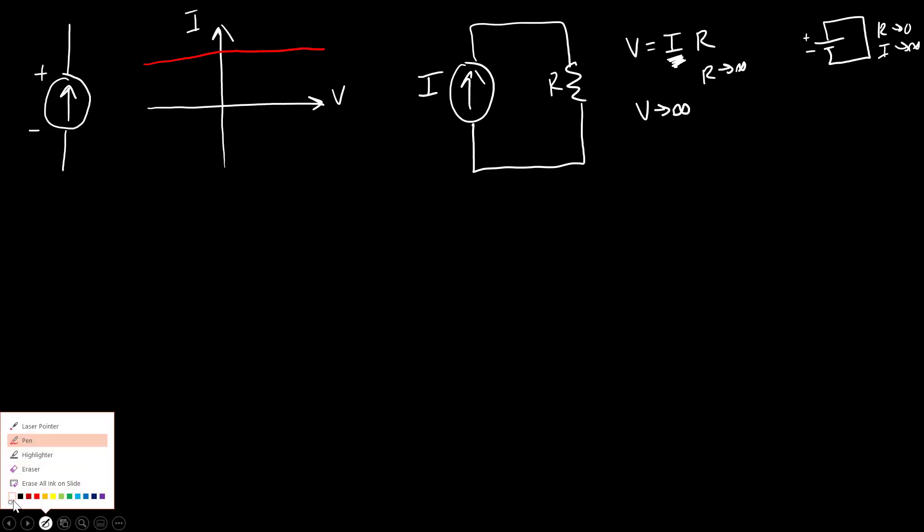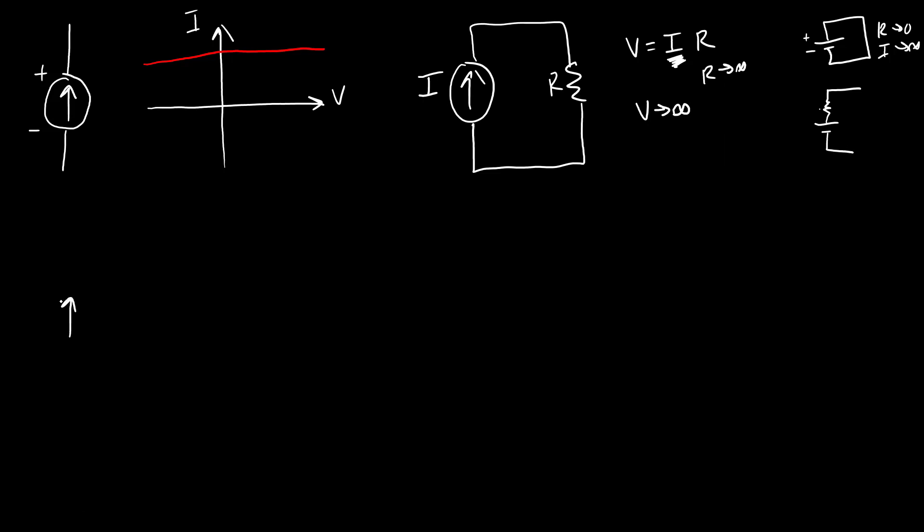So just like with the practical voltage source, we modeled that as a resistance in series with the voltage source. With a practical current source, we're going to model that as a resistance in parallel with an ideal current source. So this is going to be our model of our practical current source here with some internal resistance RS. And we're going to connect that to our external load resistor RL.